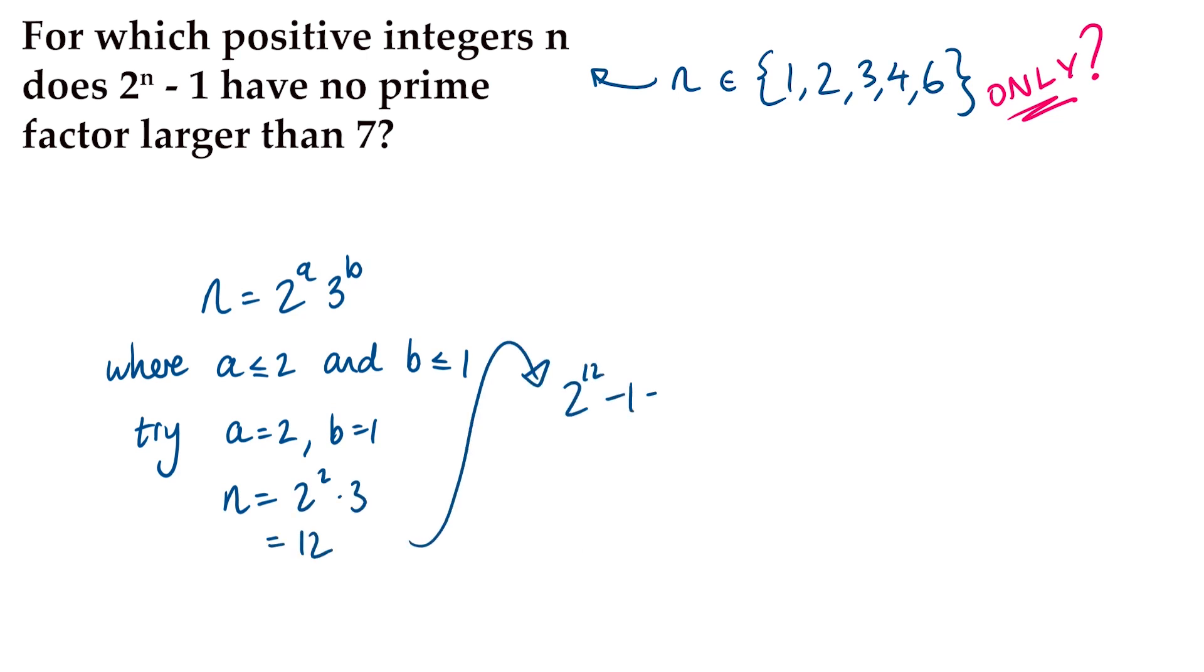Factorizing using difference of squares, we'll get 2 to the 6 minus 1 times 2 to the 6 plus 1, and we'll find that second bracket has 13 as a prime factor, so it is out. That is enough to prove that 1, 2, 3, 4, 6 are in fact the only solutions, and the solutions to our problem.